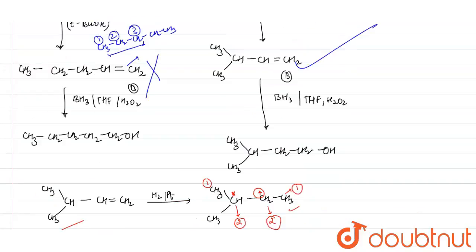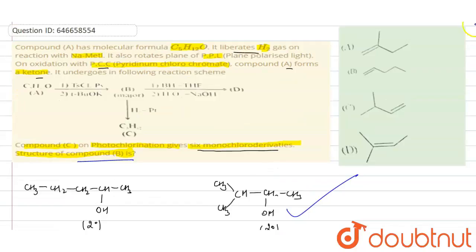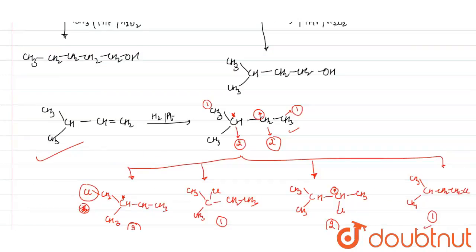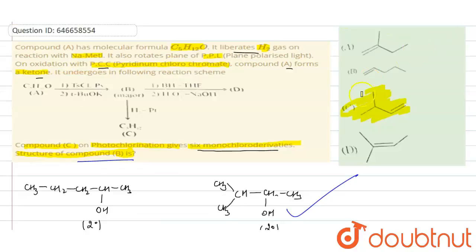We need to find out compound B. So compound B is the branched alkene structure - 2-methylbut-1-ene or similar. If I draw the line diagram, it will look like this - a three-carbon chain with a branch. This is your correct answer. Check the option - C option is your correct option.